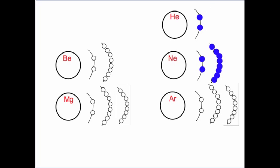Argon is atomic number 18. It has 18 protons and 18 electrons. Two are in the first shell, the second shell holds up to eight and fills completely, and then we go to the third shell. The electron configuration for argon is 2, 8, 8.